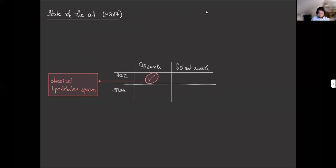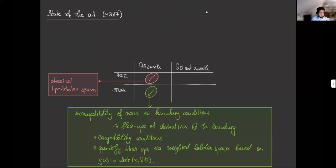However, if you move to stochastic PDEs, like the stochastic heat equation I've shown before, then you will encounter an additional difficulty, which comes from a certain incompatibility of the noise with the boundary conditions, which results in blow-ups of the derivatives, especially of the higher order derivatives of the solution at the boundary.